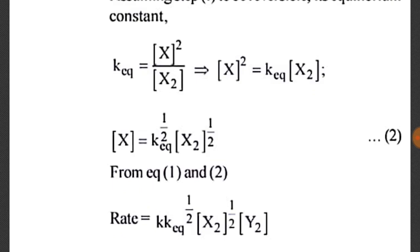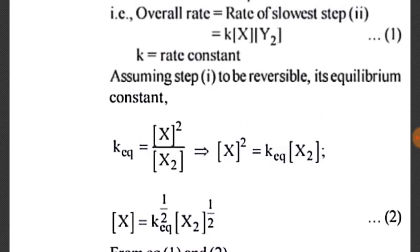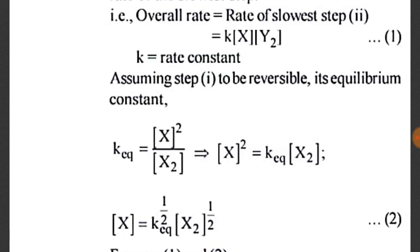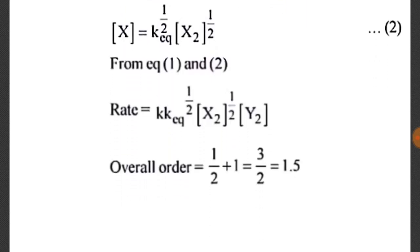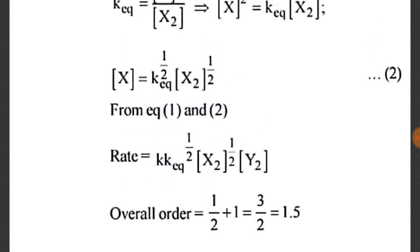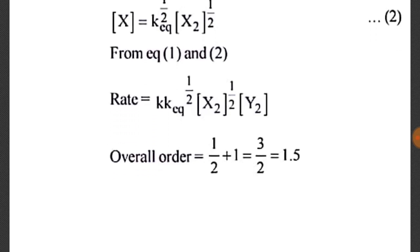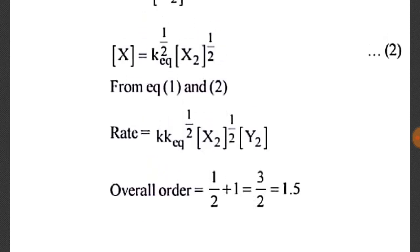From equation 1 and equation 2, we substitute to get: rate = k · K_eq^(1/2) · [X₂]^(1/2) · [Y₂]. So overall order = 1/2 + 1 = 3/2 = 1.5.